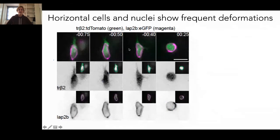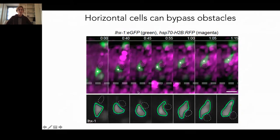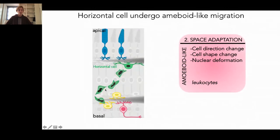What she did see, however, is that these cells indeed undergo frequent deformation at the cellular and nuclear level. In green you can see the whole cell, and in magenta a nuclear envelope marker — you can see these cells really change their shape frequently. We looked at many different parameters such as elongation ratio, and you can see they are constantly fluctuating. In addition, Rana also observed that these cells can circumvent obstacles — for example a mitotic cell in the way of the horizontal cell moving towards its final position. You can see it really circumvents it, and once it leaves the obstacle behind, it elongates again towards the direction of movement. So we concluded that these cells really undergo amoeboid-like migration — without any processes, they move through the tissue by direction changes, cell shape changes, and nuclear deformations. To our knowledge, this is one of the first times amoeboid-like migration has been shown in the developing central nervous system.